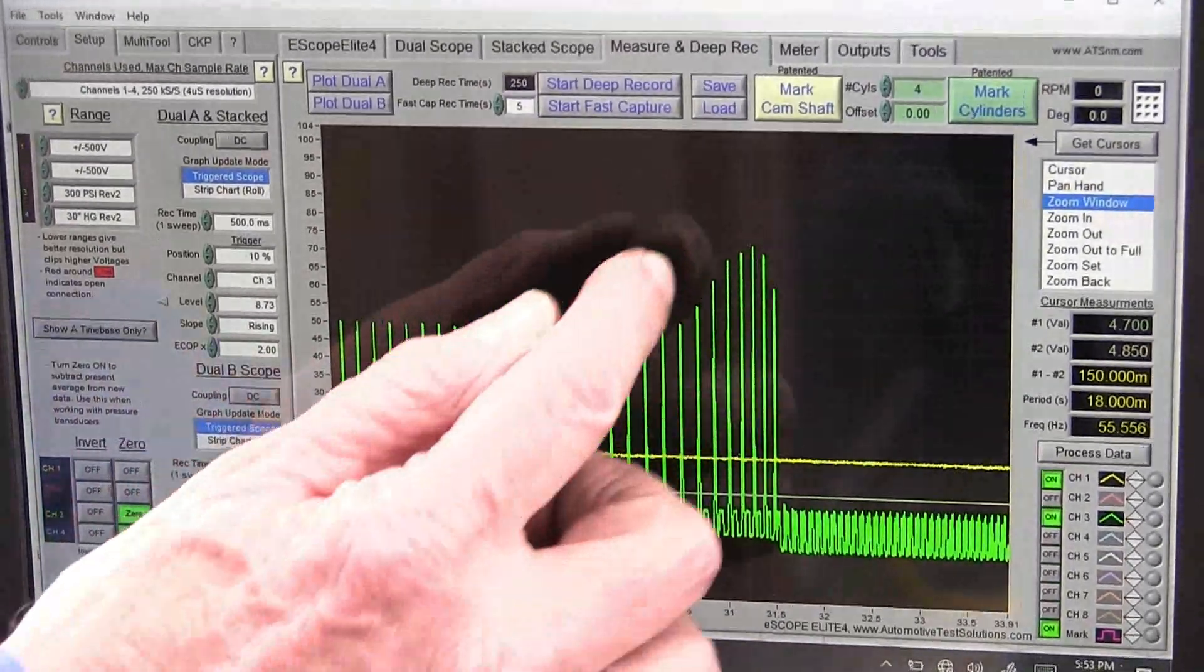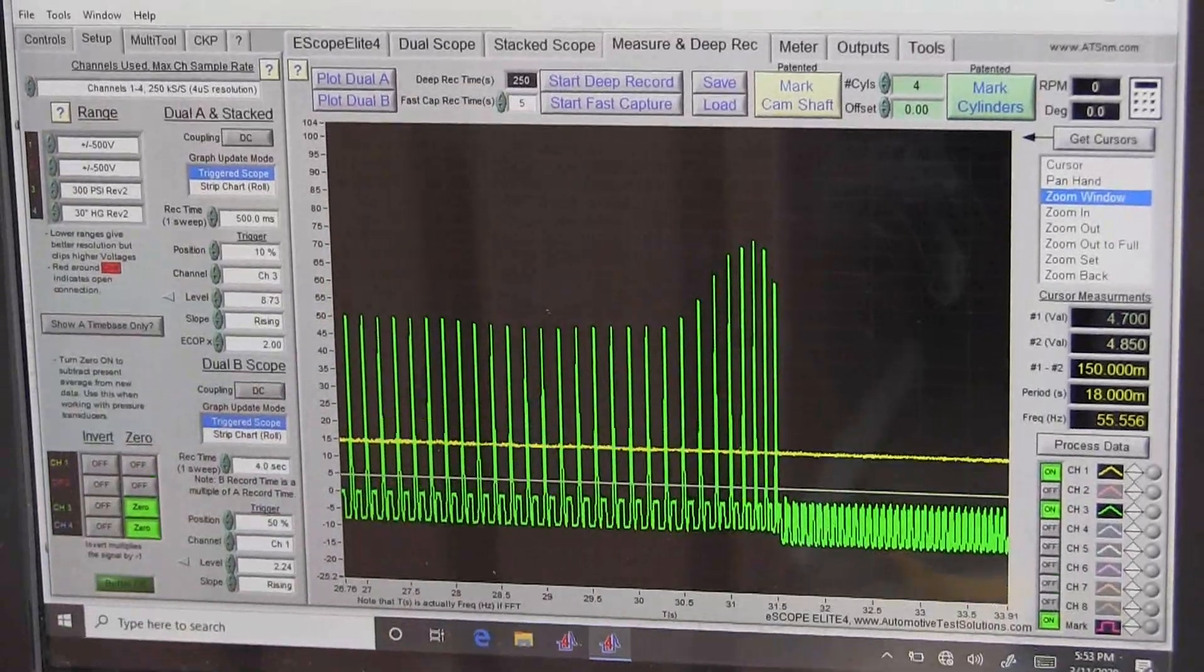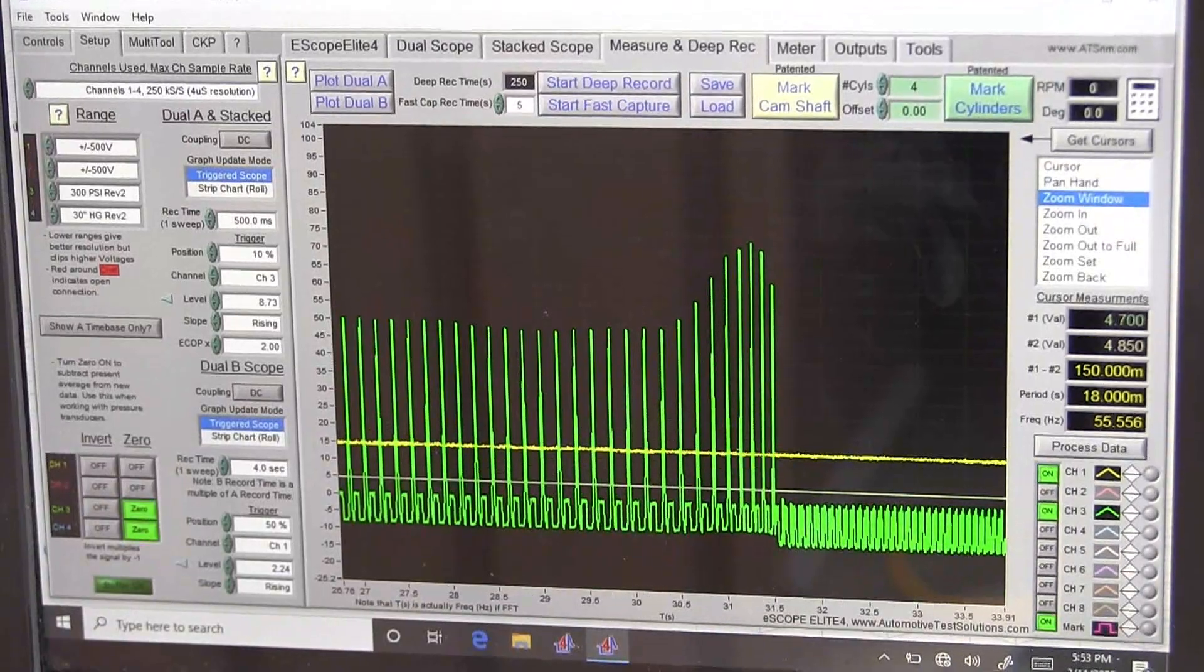Then when it goes back to an idle, the pin can hold this lifter again. That's why you always want to rev an engine, regardless of what you're looking for, with these type of problems.